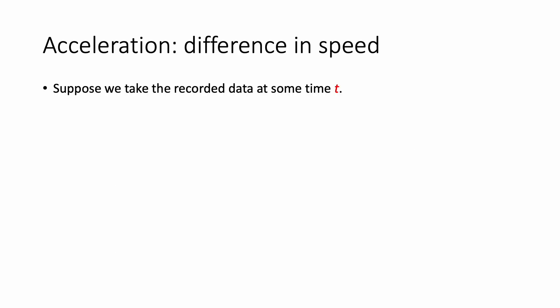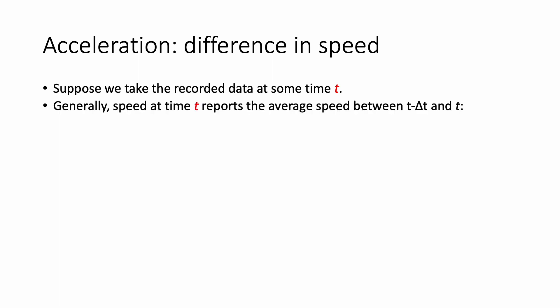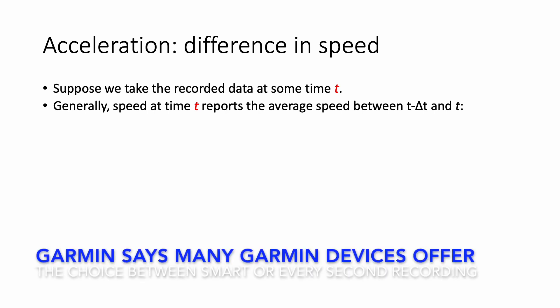Let's take a moment to talk about acceleration. Acceleration is just the difference in speed per unit time. On our Garmin, we take the recorded data at some particular time, let's call it t. The speed reported at that time point t is actually the average speed between t minus delta t and t, where delta t is the time elapsed between this time point and the previous one. On the Garmin, delta t can be set to exactly one second.